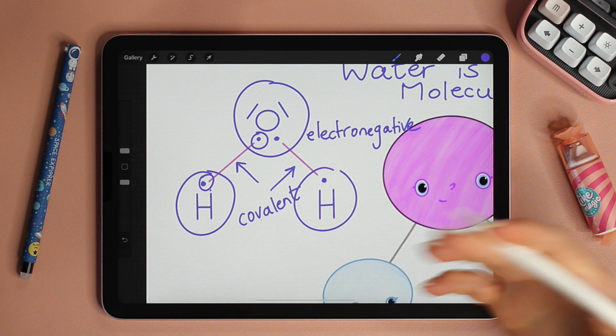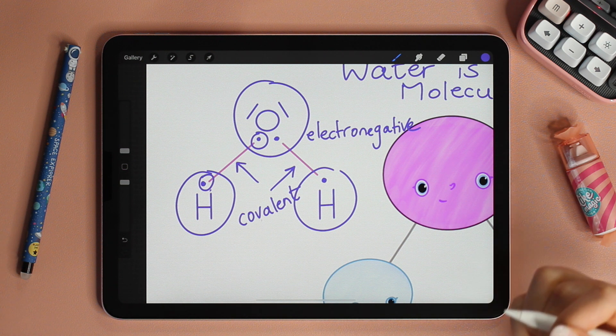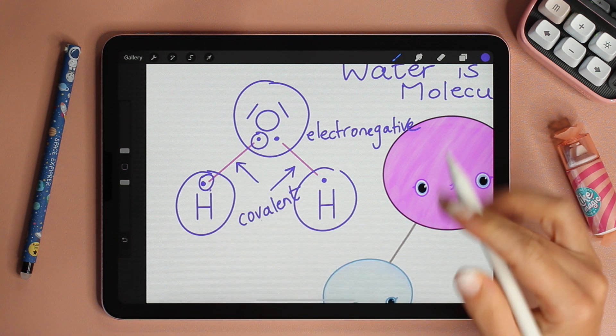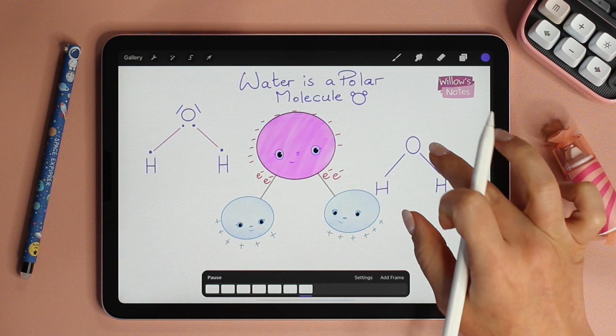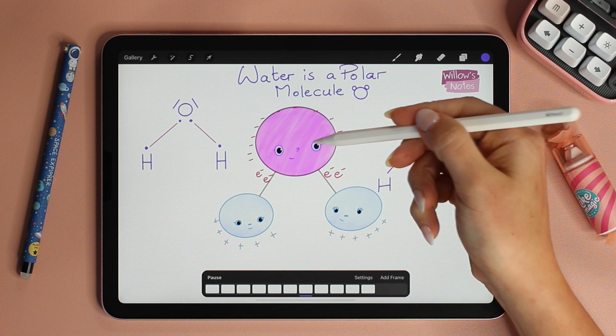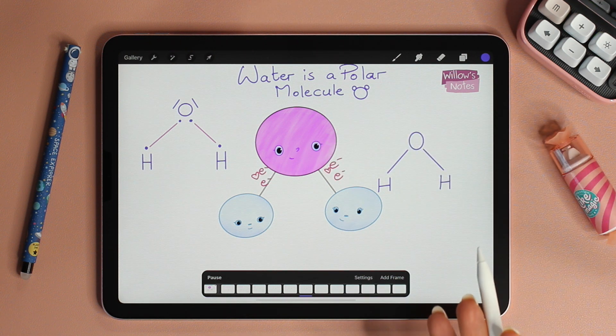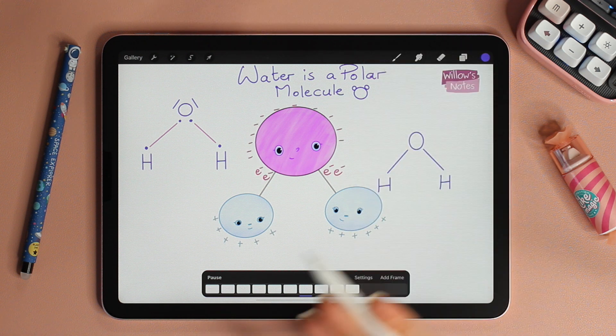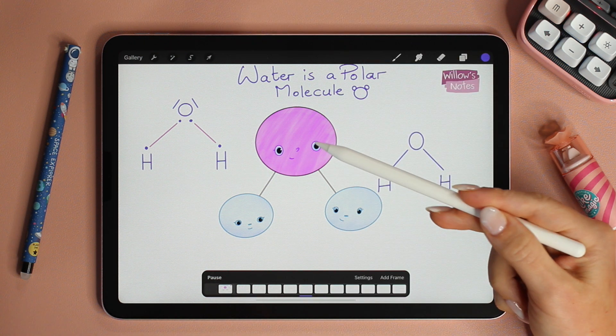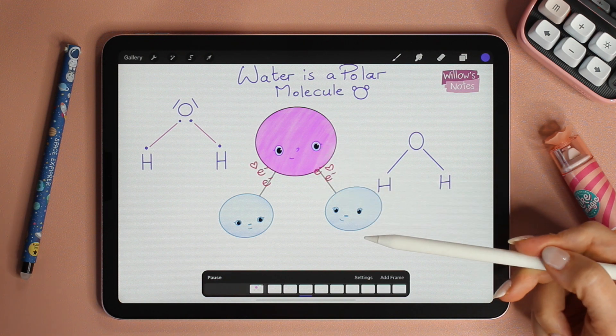But what does that mean? It means that the sharing of the electrons will not be equal. Let's look at this little animation. As you can see, because oxygen is electronegative, it pulls the electrons towards it. The electrons that are being shared exist closer to oxygen than they do to hydrogen.